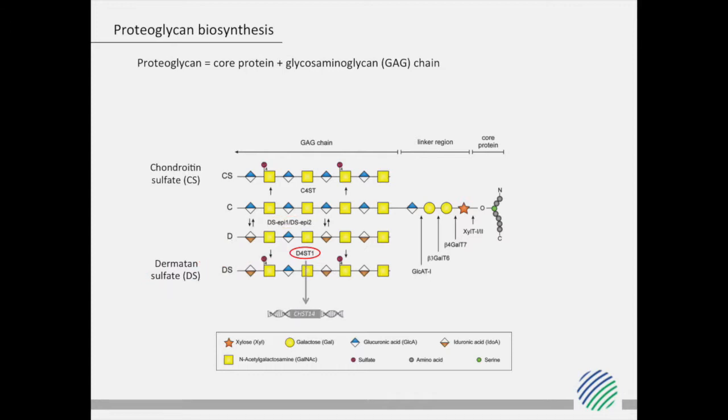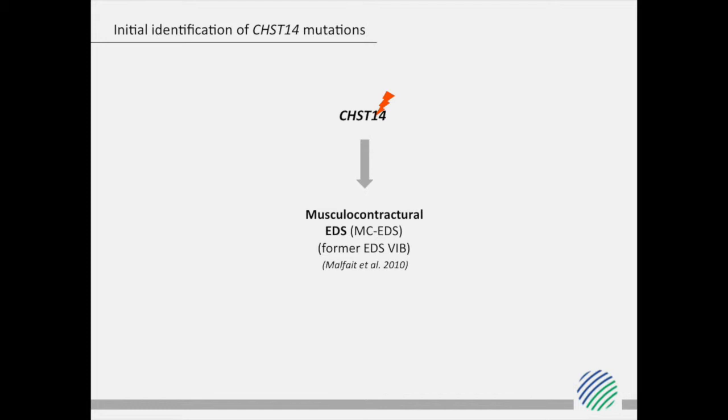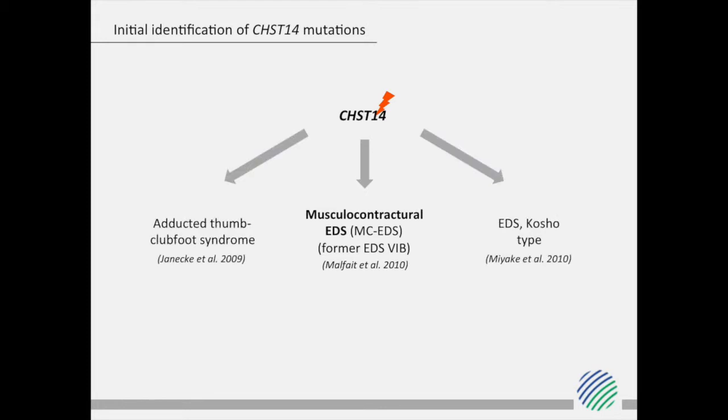One of these enzymes, dermatan sulfosulfotransferase 1, is encoded by the CHST14 gene. Recently, we identified bi-allelic CHST14 mutations in a subset of patients with an EDS-6B phenotype, which we coined musculocontractual EDS. Defects in CHST14 were already reported in two other recessive conditions: adductor-thumb-club-foot syndrome and EDS-Cuscio type. Based on the overlapping phenotypic characteristics, these three conditions were concluded to be a single, clinically recognizable form of EDS referred to as D4ST1-deficient EDS.